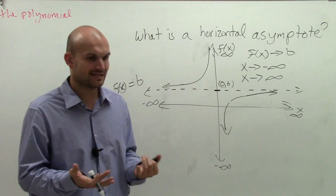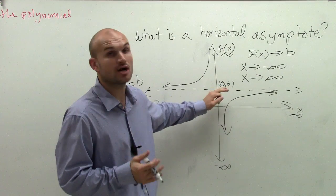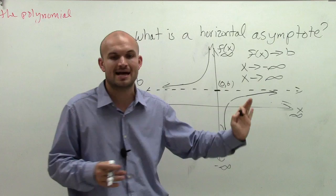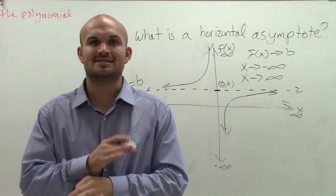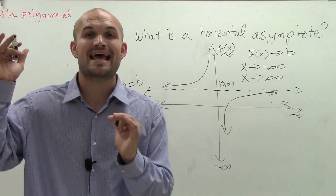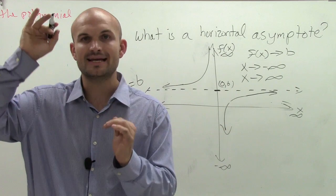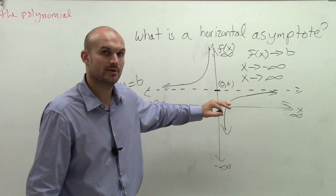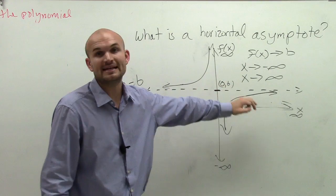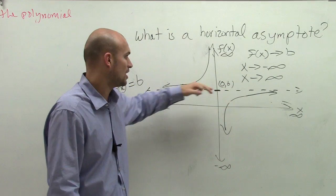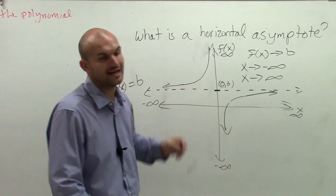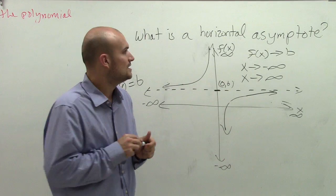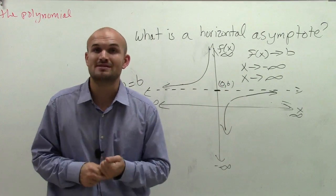An asymptote can cross. There are some functions where it crosses a horizontal asymptote. But what's important is after it crosses, you can see its end behavior is it approaches our horizontal asymptote to infinity or to negative infinity, or as x goes to negative infinity or positive infinity.